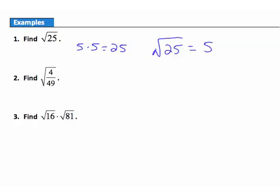Example 2: find the square root of the fraction 4/49. To find the square root of a fraction, we take the square root of the numerator and then the square root of the denominator. The square root of 4 is 2, and the square root of 49 is 7, because 7 times 7 is 49. So the square root of 4/49 is 2/7.